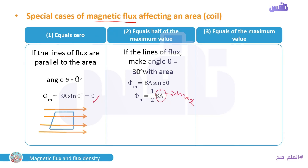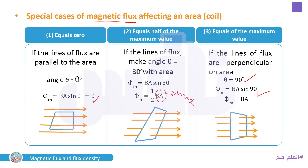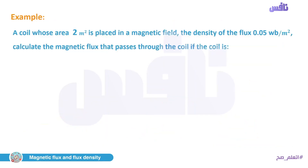The angle between the plane and the flux lines is 30°. The final case: if the flux lines are perpendicular to the area, θ = 90°, so Φ = BA sin 90 = BA × 1 = BA. This is the maximum value of magnetic flux.